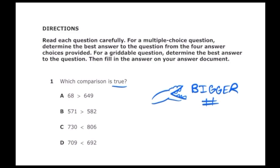Letter A: 68 and 649. The alligator is facing 68 but 68 is not greater than 649, so letter A is not correct. Letter B: 571 and 582. The alligator is facing 571 but if we look at the tens place we can see that 7 is less than 8, so we know that 571 is less than 582.